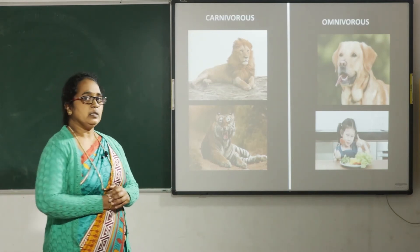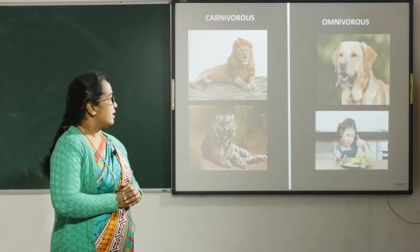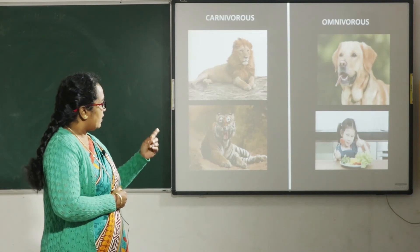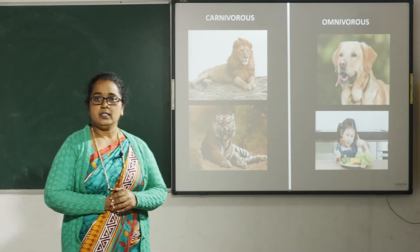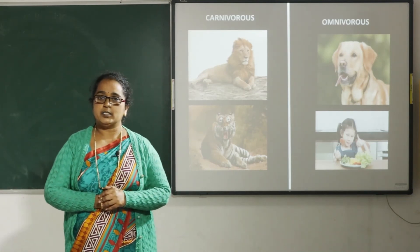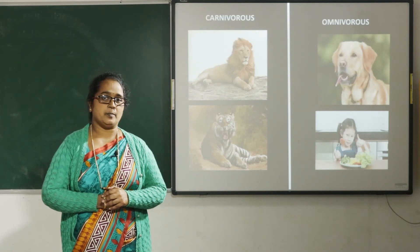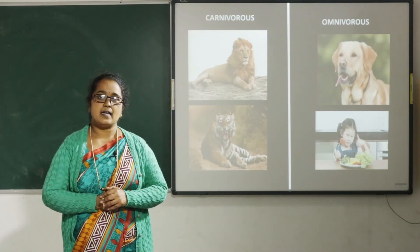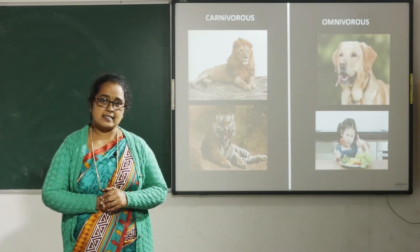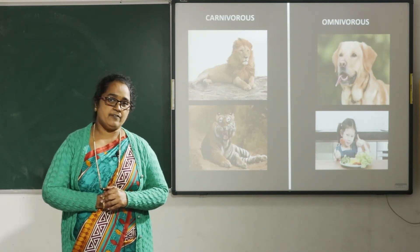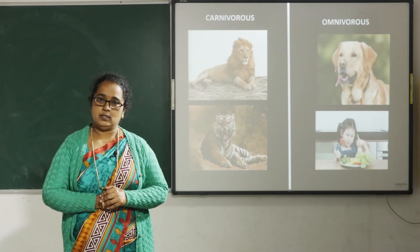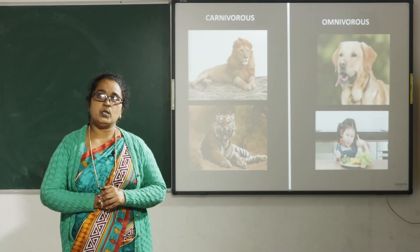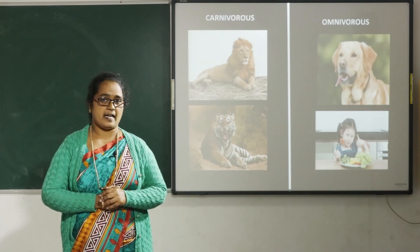Next we have animals like dogs and human beings, which eat both food got from plants as well as the flesh of other animals. They are known as omnivorous animals.